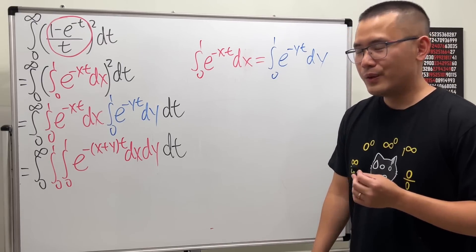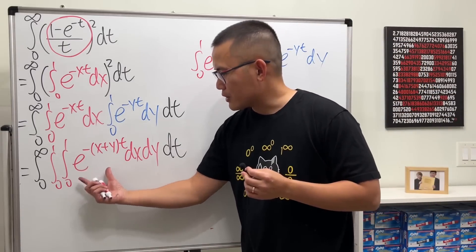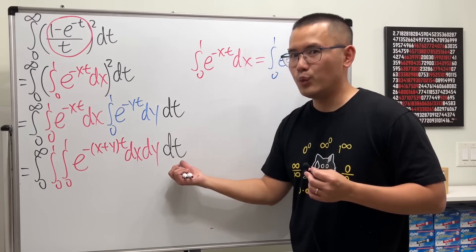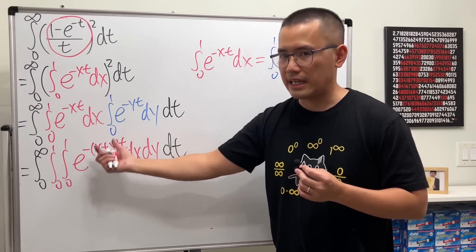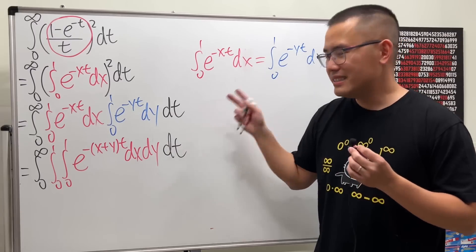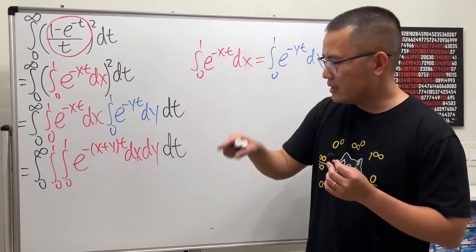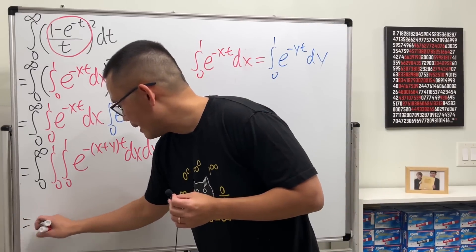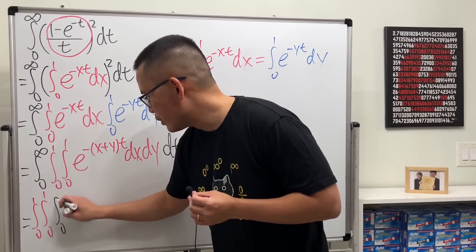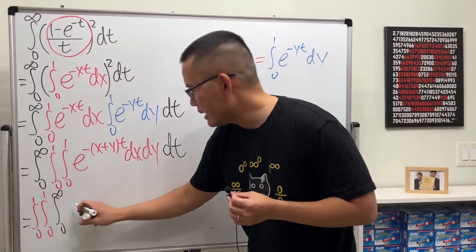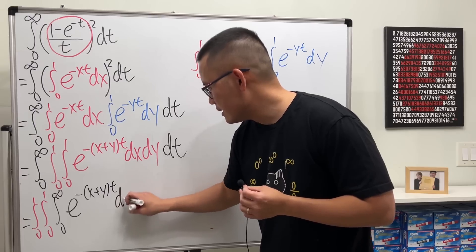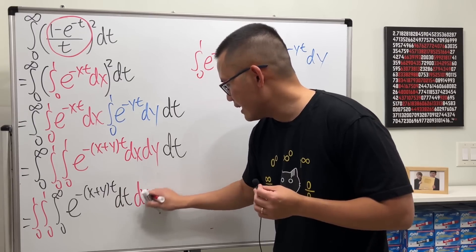What do we do next? It would be nice to integrate in the t world first, because x plus y is just a constant there. Thanks to Fubini's theorem, we can totally change the order of integration. So I'll write it as: integral from zero to one, zero to one, then zero to infinity.